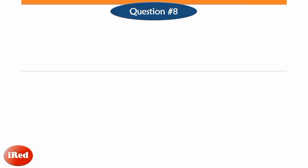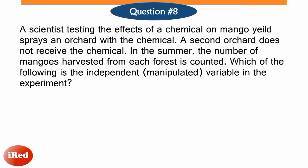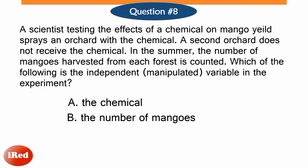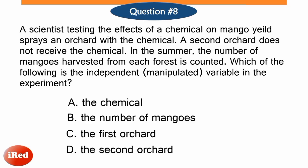Question number 8. A scientist testing the effects of a chemical on mango yield sprays an orchard with the chemical. A second orchard does not receive the chemical. In the summer, the number of mangos harvested from each orchard is counted. Which of the following is the independent or manipulated variable in the experiment? Letter A, the chemical. Letter B, the number of mangos. Letter C, the first orchard. Or letter D, the second orchard.